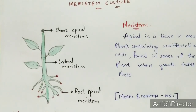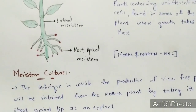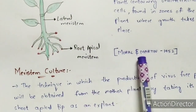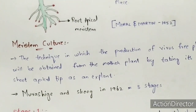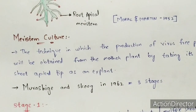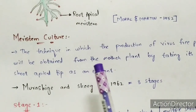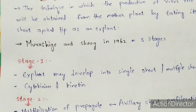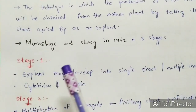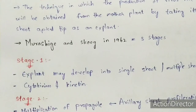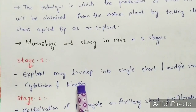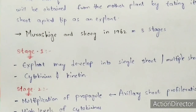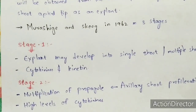Coming to the discovery, two scientists — Morel and Martin — discovered the total technique of meristem culture in 1952. Later, Murashige and Skoog in 1962 explained that there are totally three stages involved in meristem culture. Stage one: the explant may develop into a single shoot or multiple shoots, and it requires chemicals such as cytokinins and kinetin for energy. Kinetin is a protein utilized in the stage one process.